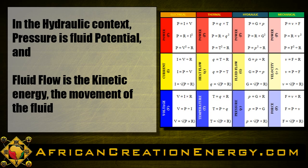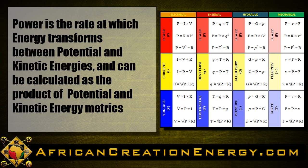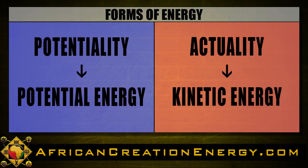From these examples, we can see that in the various domains, power — which is the rate at which energy transforms between potential and kinetic energies — can be calculated as the product of potential and kinetic energy metrics.